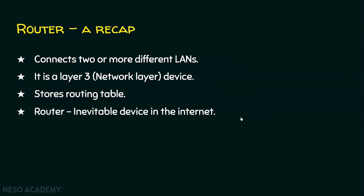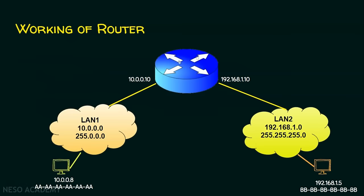We will also recap the working of a router. This router has two interfaces — interface number one and interface number two. One interface is connected to one local area network, and the other interface is connected to another local area network. The IP address of each interface is the default gateway for all the PCs or devices in its respective local area network.